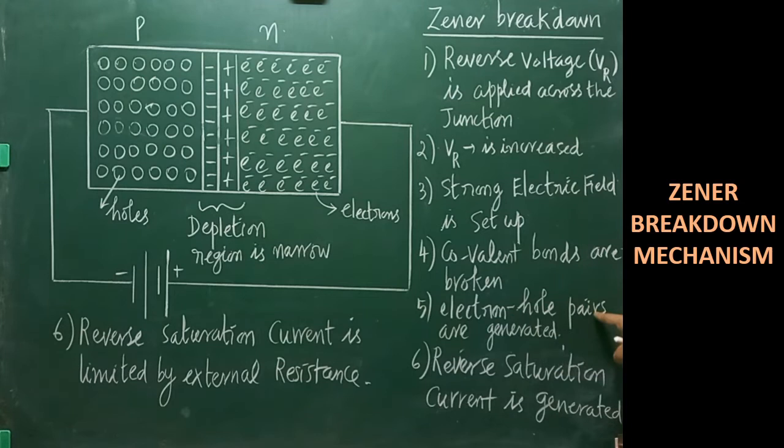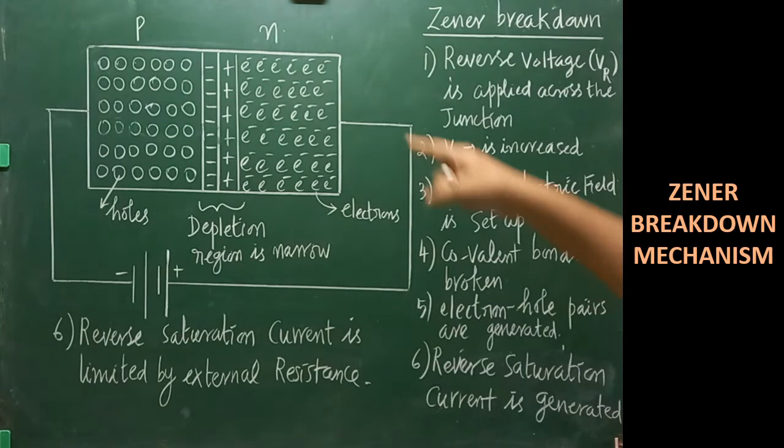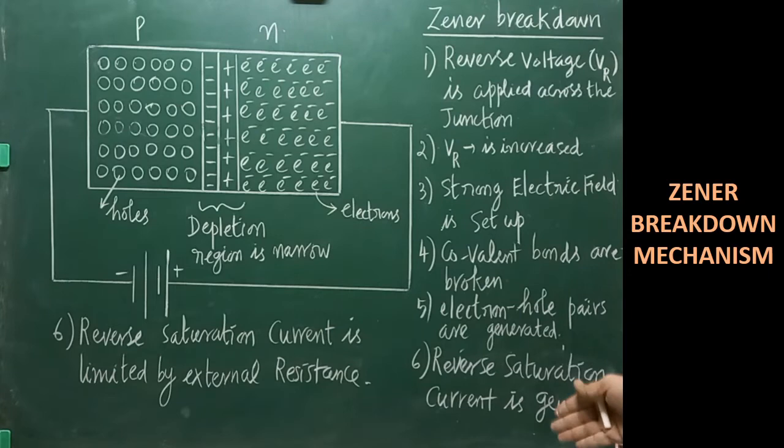Because of the generation of electron-hole pairs, a current called reverse saturation current is generated within the Zener diode. This entire phenomenon is called Zener breakdown. The production of the reverse saturation current happens at a particular reverse voltage, and that reverse saturation current will increase abruptly.